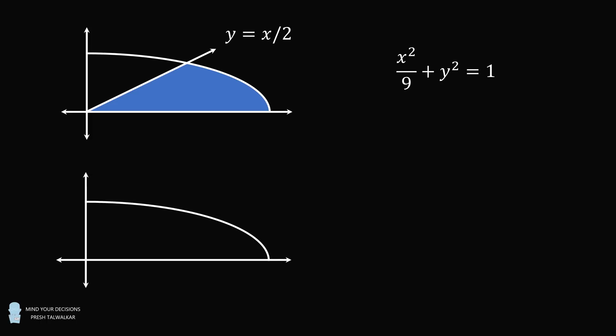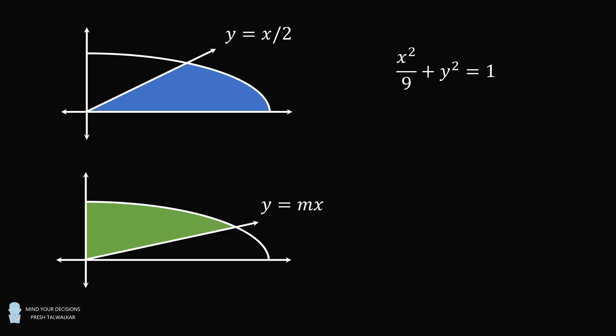Now consider the same ellipse in the first quadrant, and consider the line y equals mx. Now consider the region bounded by this line, the ellipse, and the y-axis. The question is to solve for the value of m so the green and blue areas are equal.